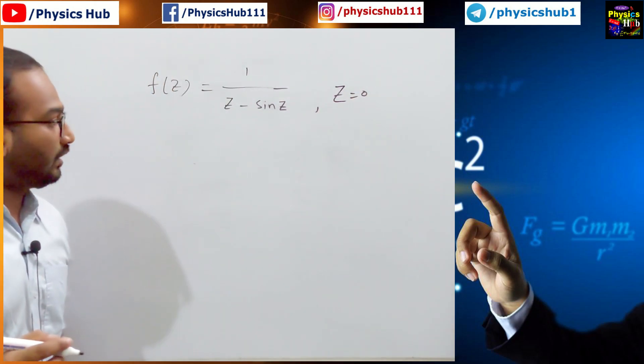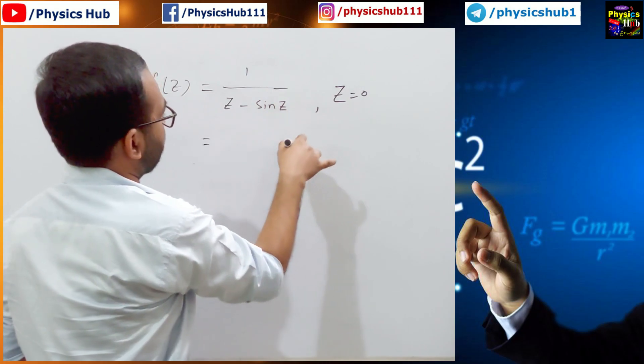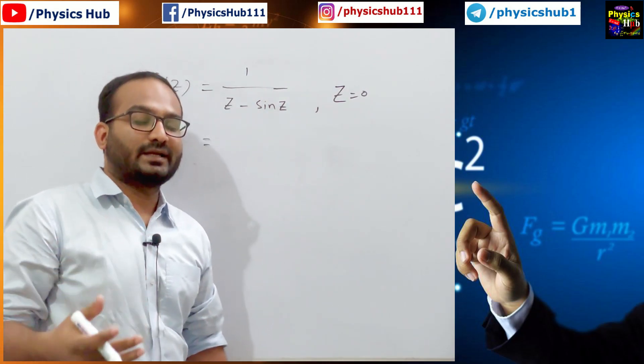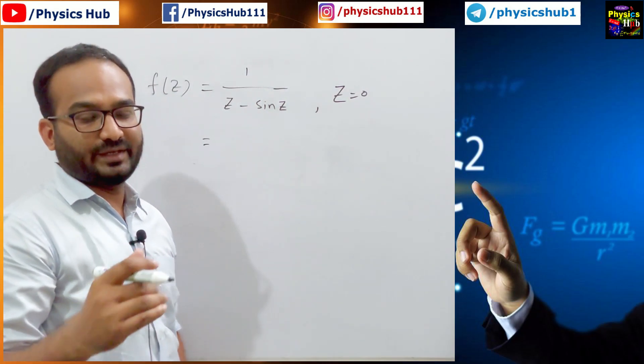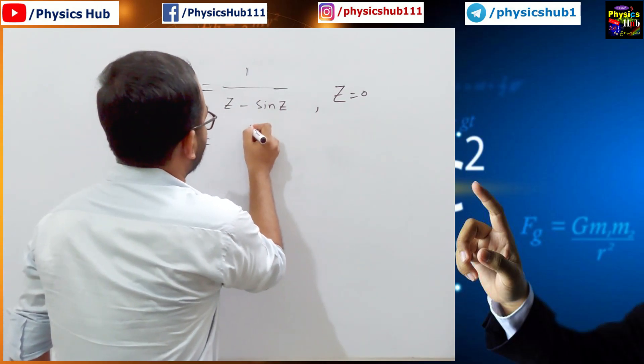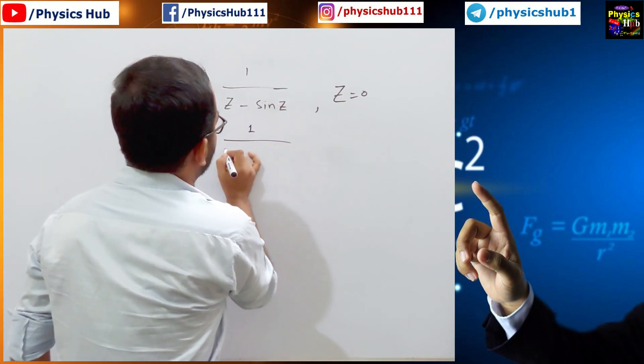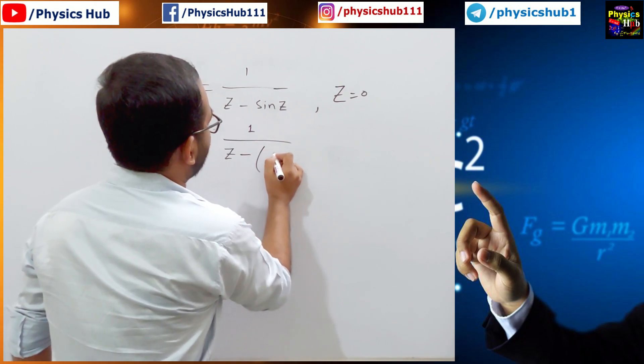So what can you do? Whenever you get something like sin, you will get an idea that it needs to be expanded. So if you do it like this, 1 by, let's keep it as z minus sin z.